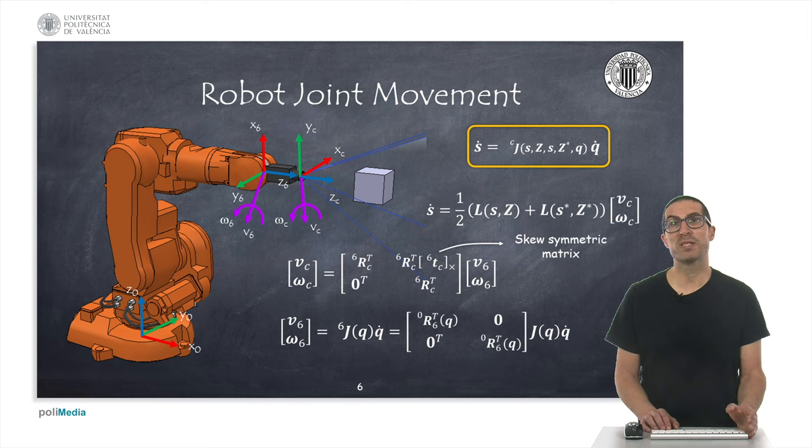To compute this Jacobian matrix, we will split our problem into several parts, which is easier to understand. First, we have the relationship between the speed of the points and the linear and angular velocities of the camera's reference frame. On the other hand, these speeds will depend on the linear and angular speeds of the end effector frame, denoted here as v6 and ω6.